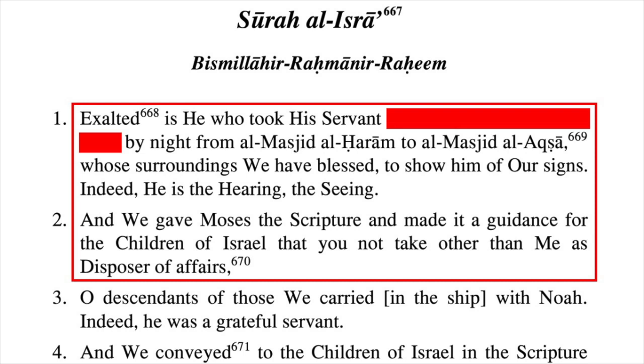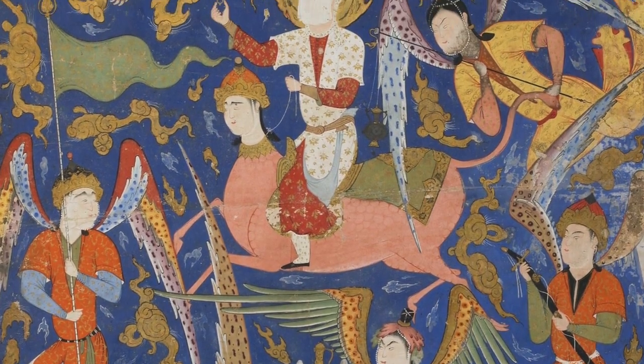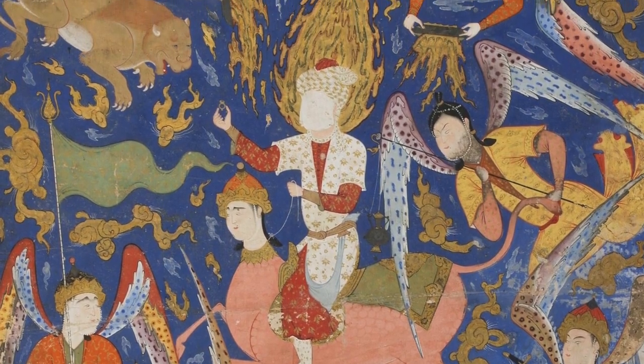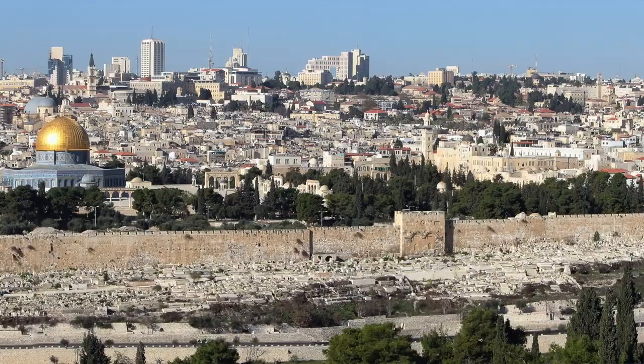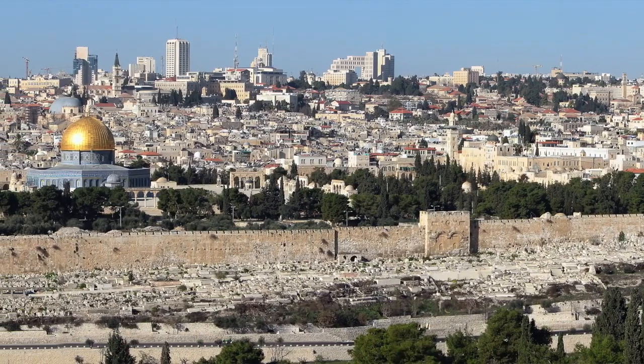'...that you not take other than me as a disposer of affairs.' In context, the night journey in the Quran sounds like it's talking about Moses — God took Moses from one place to another and gave him the scripture to guide the children of Israel. Later Muslim sources claim that this is about Muhammad's night journey, but this later legend had nothing to do with Abd al-Malik building the Dome of the Rock. The Dome of the Rock was built before the story of Muhammad's night journey was invented.